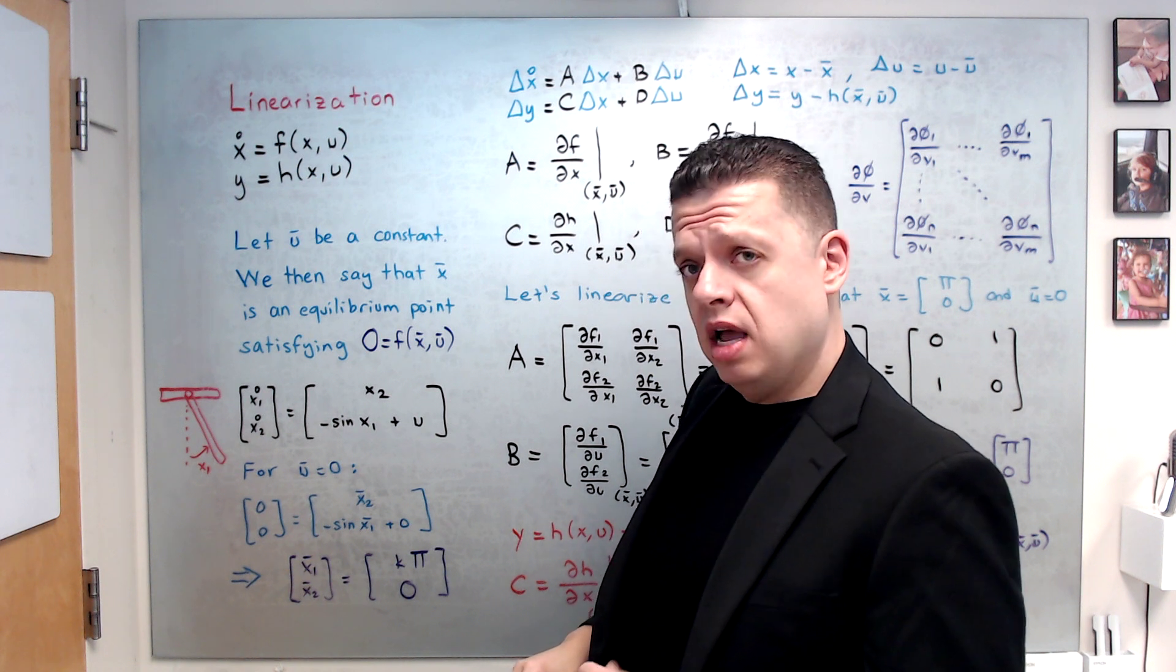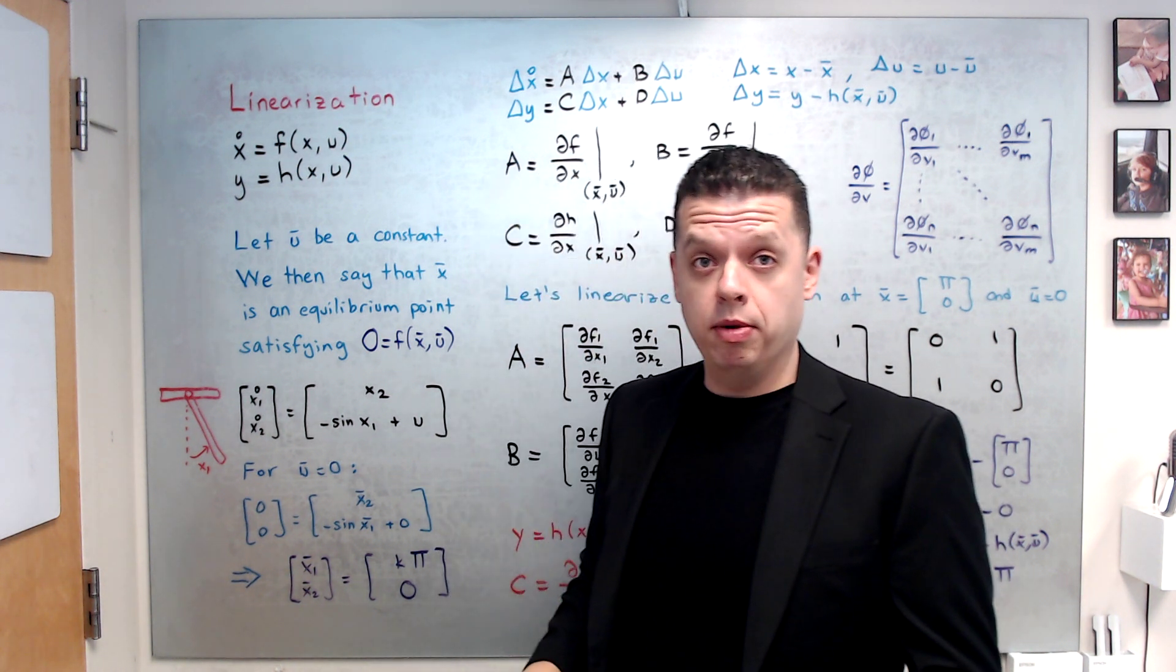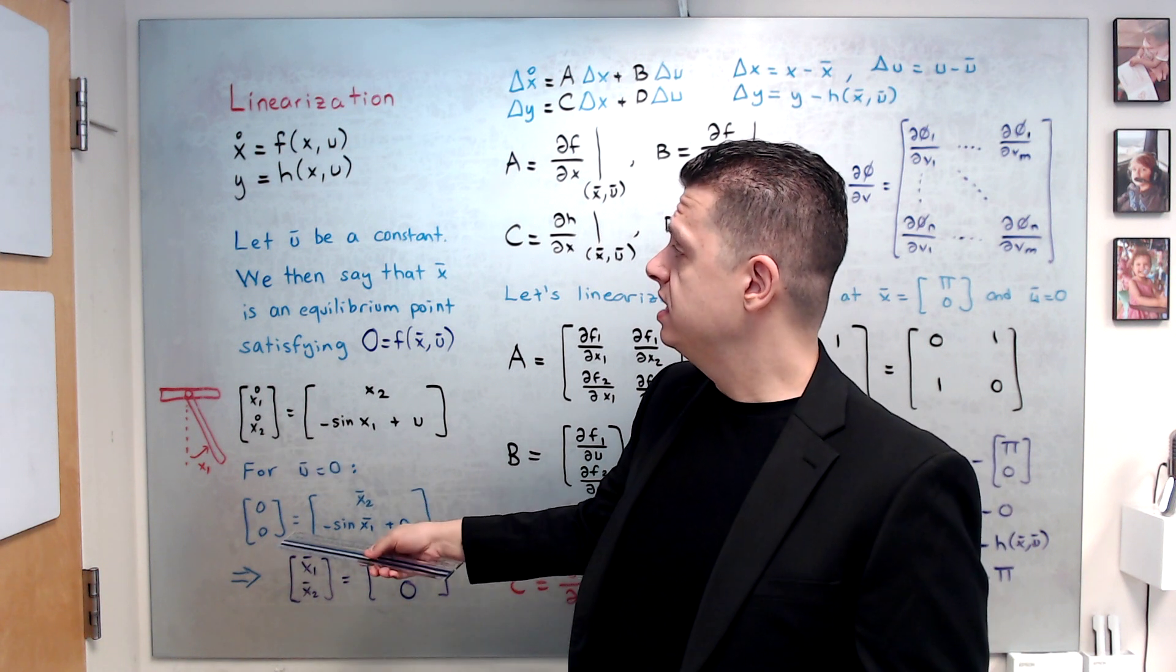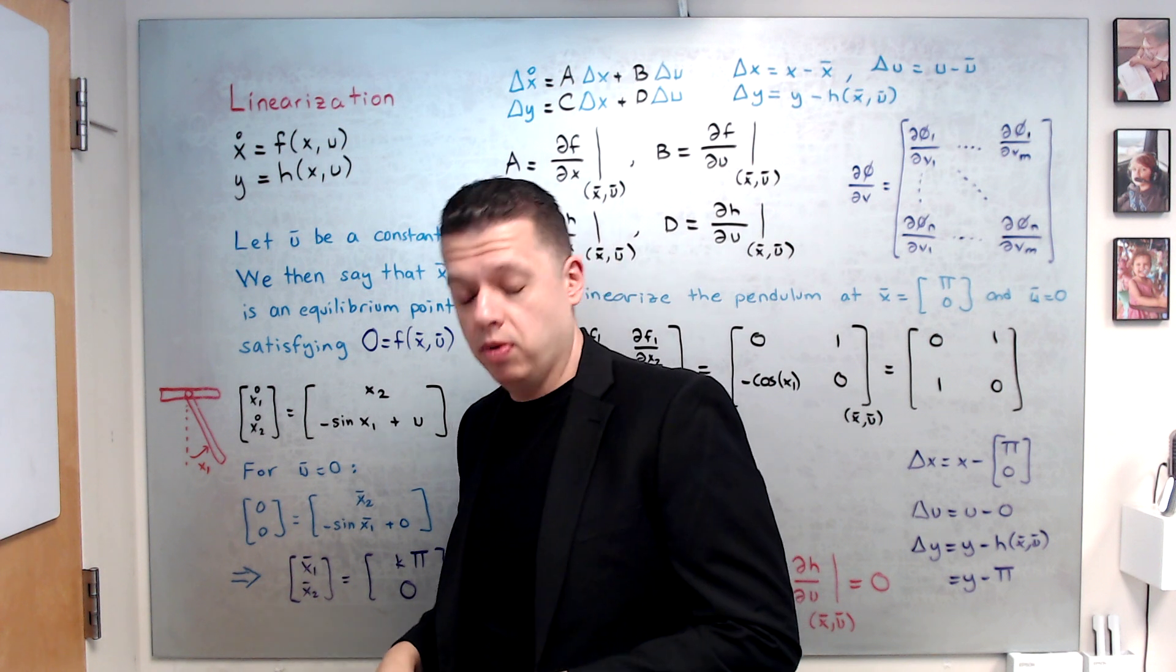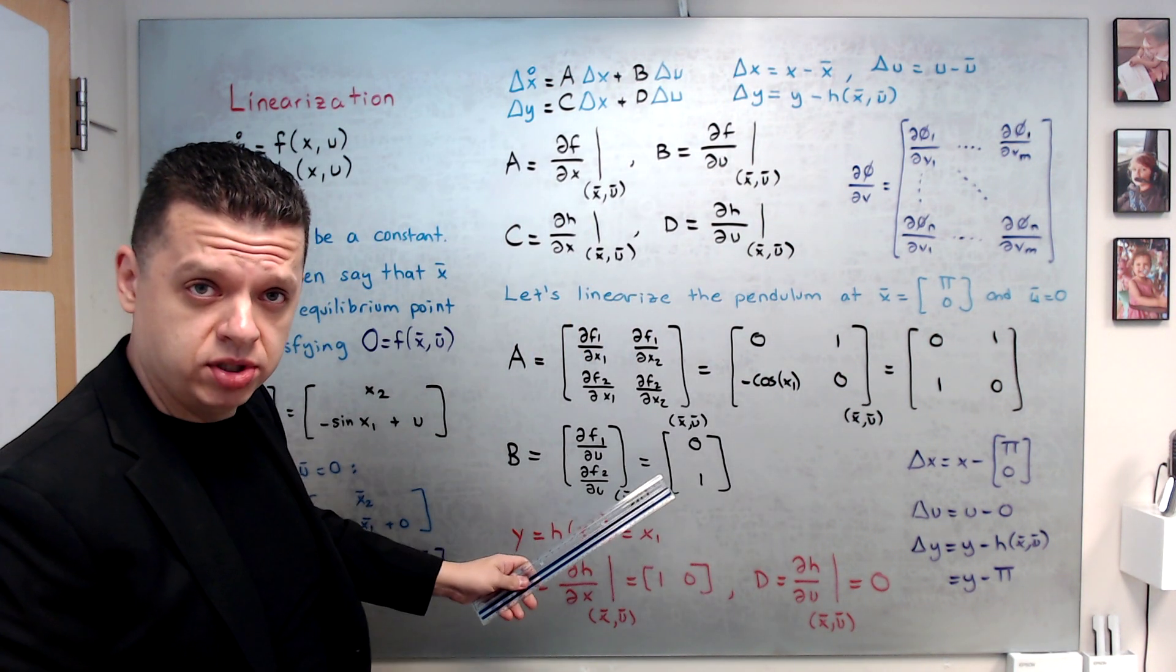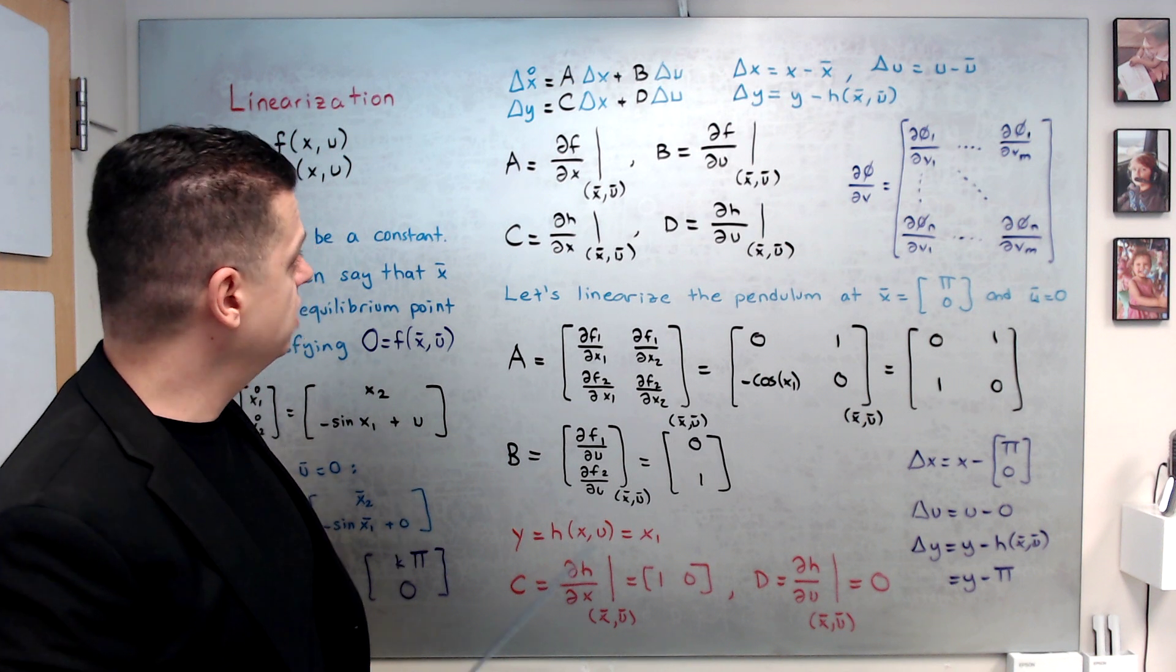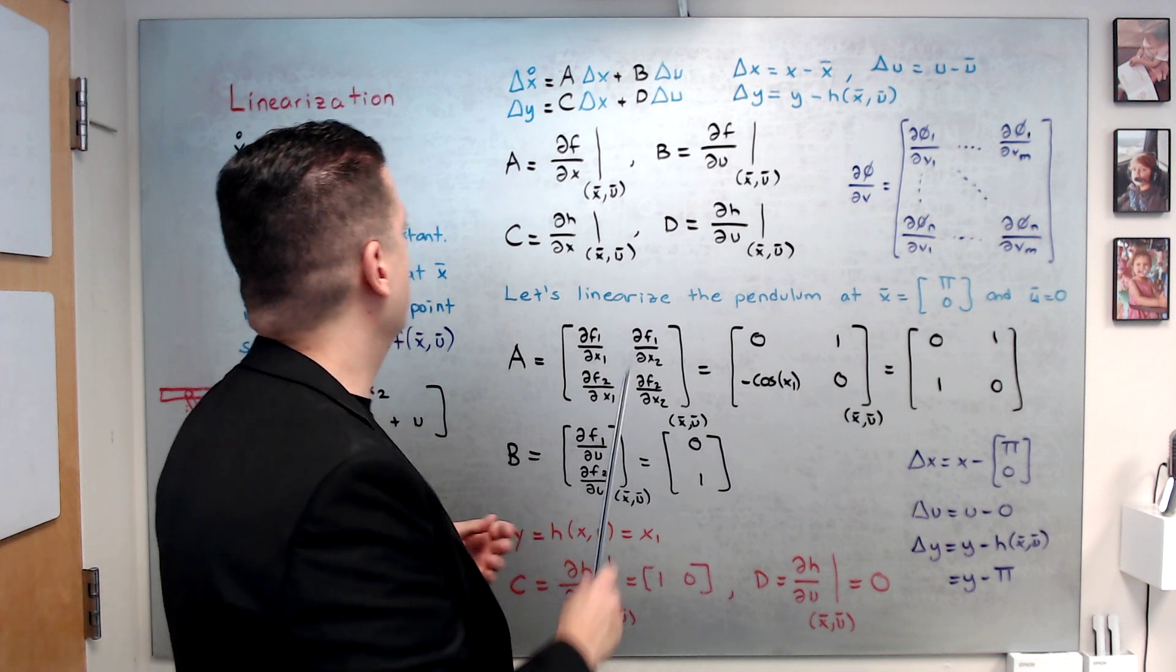So we have two equilibrium points when u bar is zero for this pendulum system. All right, so let's say we would like, we are interested to control this pendulum on one of the equilibrium points. Then we need to linearize it on those equilibrium points, on the selected equilibrium point.